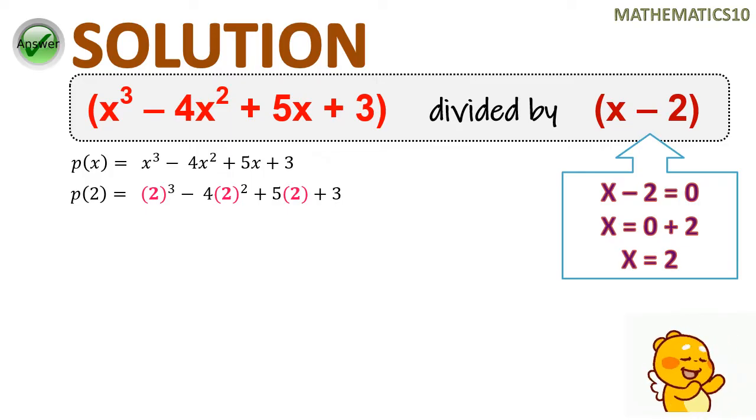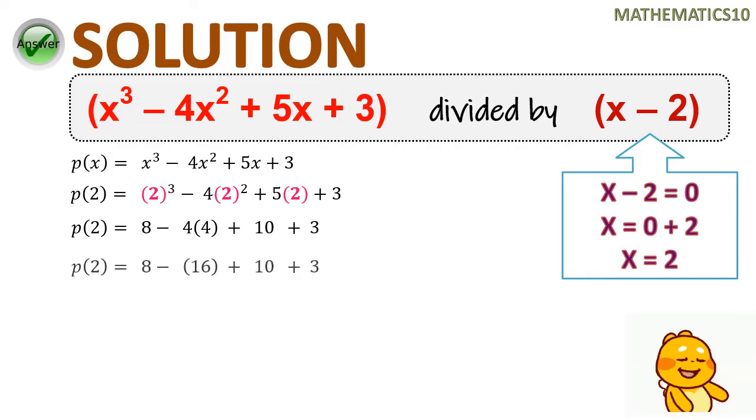You will simply change all the x's to 2. And after that, you will apply your skills in evaluating polynomials. In evaluating, we are following always the order of operations rules. We are going to start with the exponents. We have 2 raised to 3, which is positive 8. Then 2 raised to 2 is 4. And right after that, we proceed with multiplication. Multiplying, we will have 4 times 4, we will have 16.